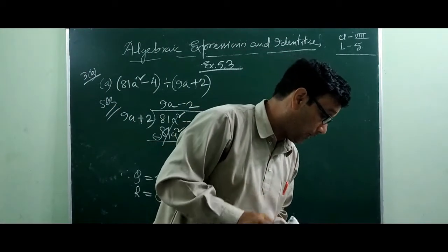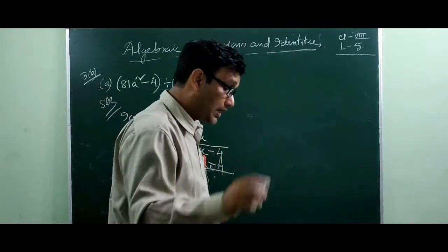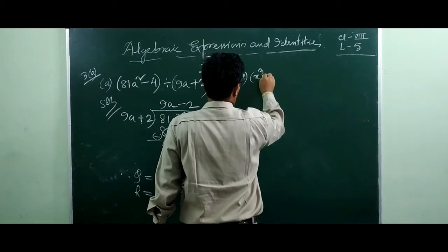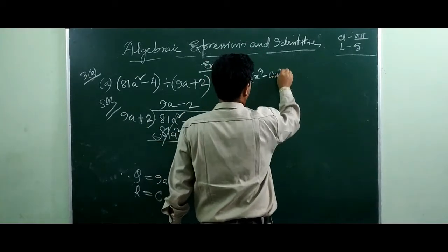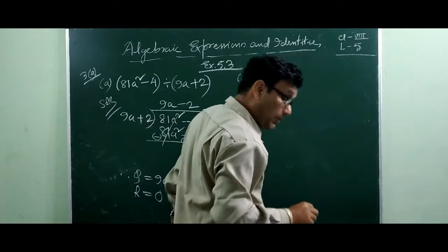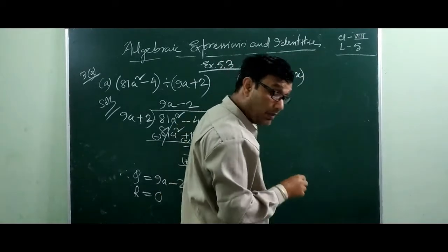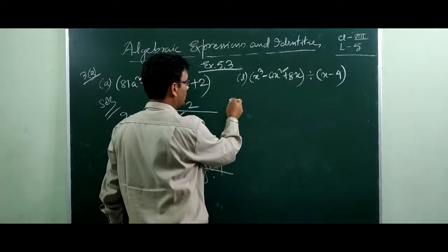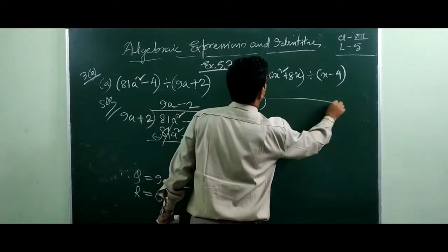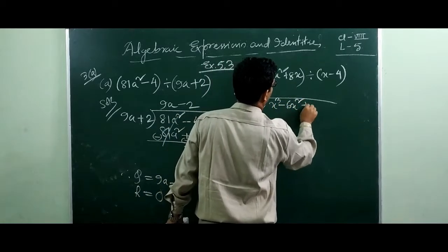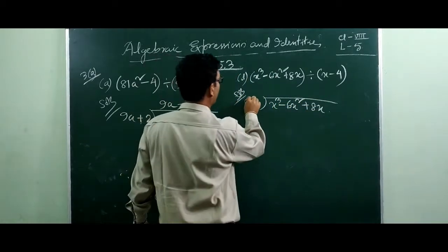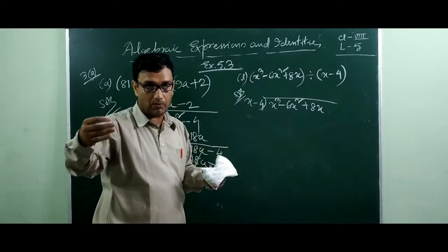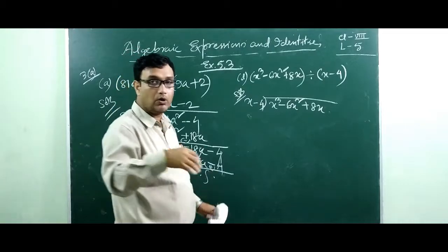Let me solve one more question to make it clear. Question number 3d: x cubed minus 6x squared plus 8x divided by x minus 4. Here x cubed divided by x — by what number must you multiply x to get x cubed? You multiply by x squared. So write x squared as the first term of the quotient.